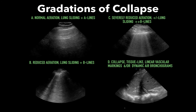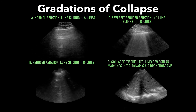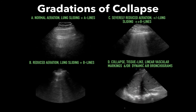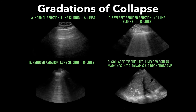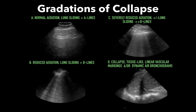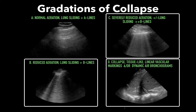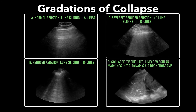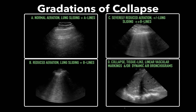Above the effusion, you'll often see gradations of collapse. Large effusions may lead to severe collapse, whereas smaller effusions lead to less. As you go from the effusion up towards the apex, you will usually see the progression from collapse to less collapse, to frequent B lines, to less B lines, to eventual A lines — representing the transition from collapsed lung to less collapsed lung.